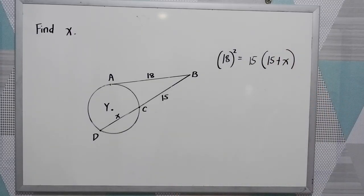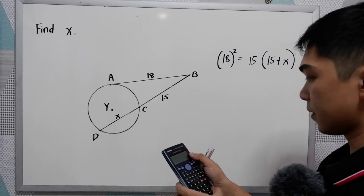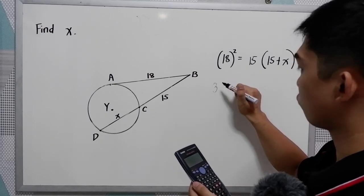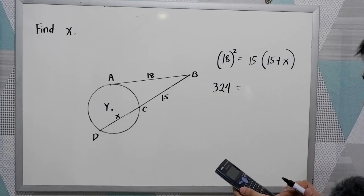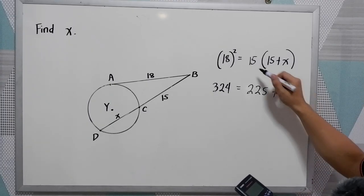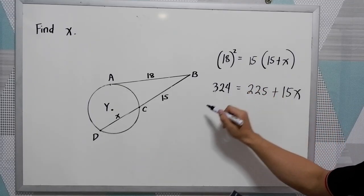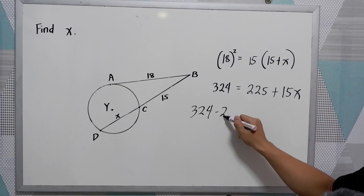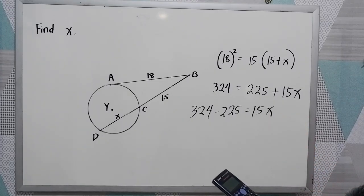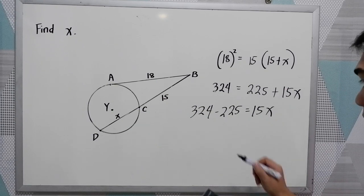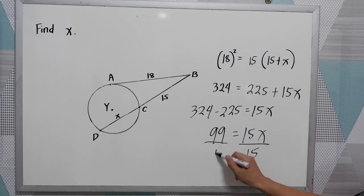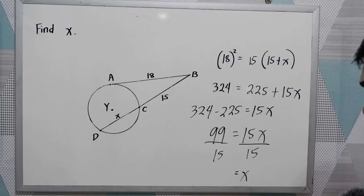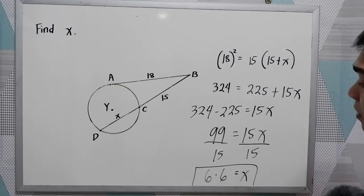Using a calculator, 18 squared is 324, equal to 15 times 15, which is 225, plus 15X. So 324 minus 225 equals 15X, giving us 99 equals 15X. Dividing by 15, X equals 99 divided by 15, which is 6.6. So X is 6.6.